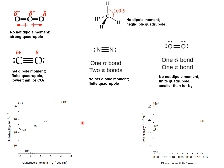For CO2 capture from flue gases, we rely on the large differences between the quadrupole moments of CO2 and nitrogen, and also the polarizability of CO2 is higher than that of nitrogen.